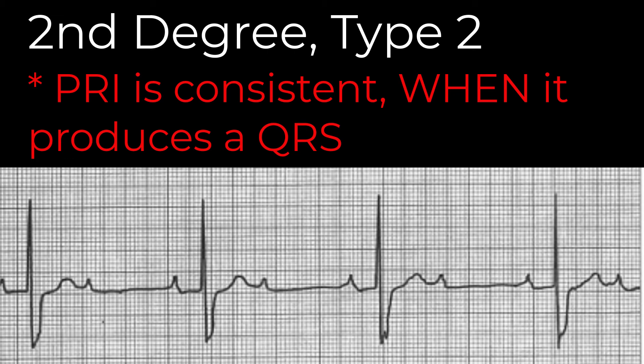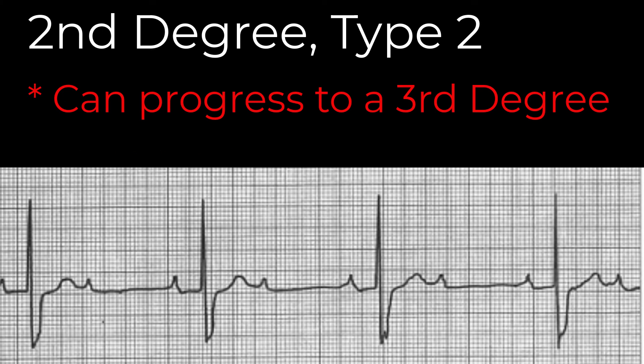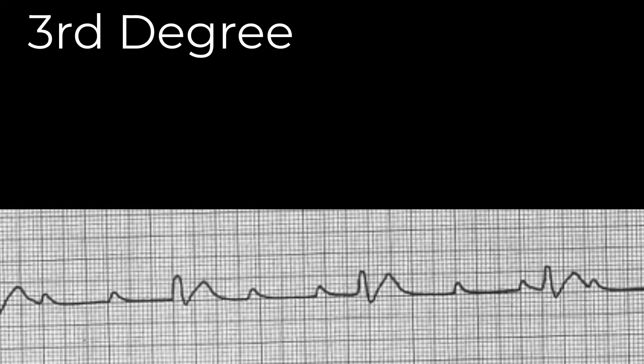The clinical significance of this rhythm is not about where it is now, but where it may be headed. Most patients will tolerate a second-degree type 2 unless it is resulting in poor perfusion because of how slow the ventricular response is. The bigger concern is that it reflects a more significant failure of the AV node and is at risk for progressing to a third-degree block, which is clinically significant. In a third-degree block, the AV node is no longer conducting impulses at all, and the atria and ventricles are firing and contracting independently of each other.